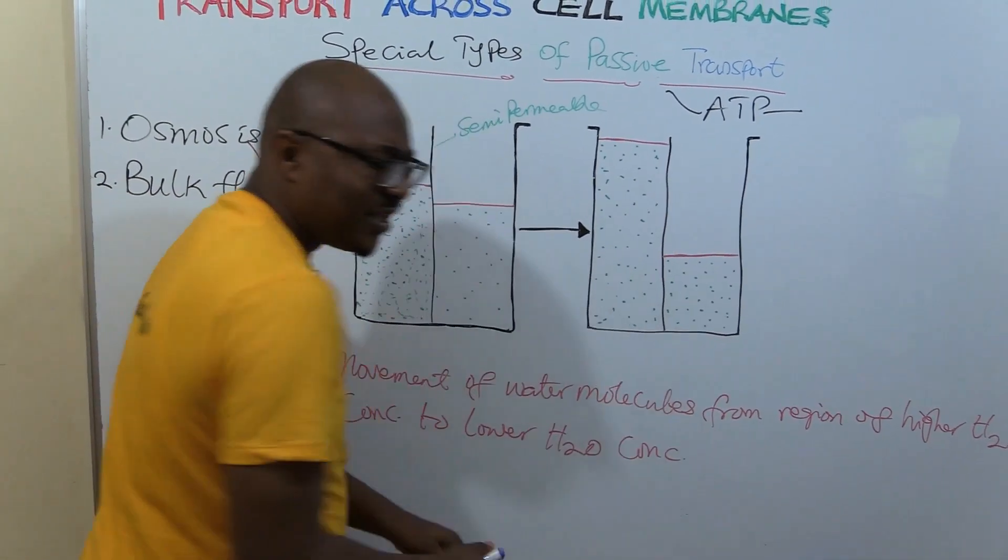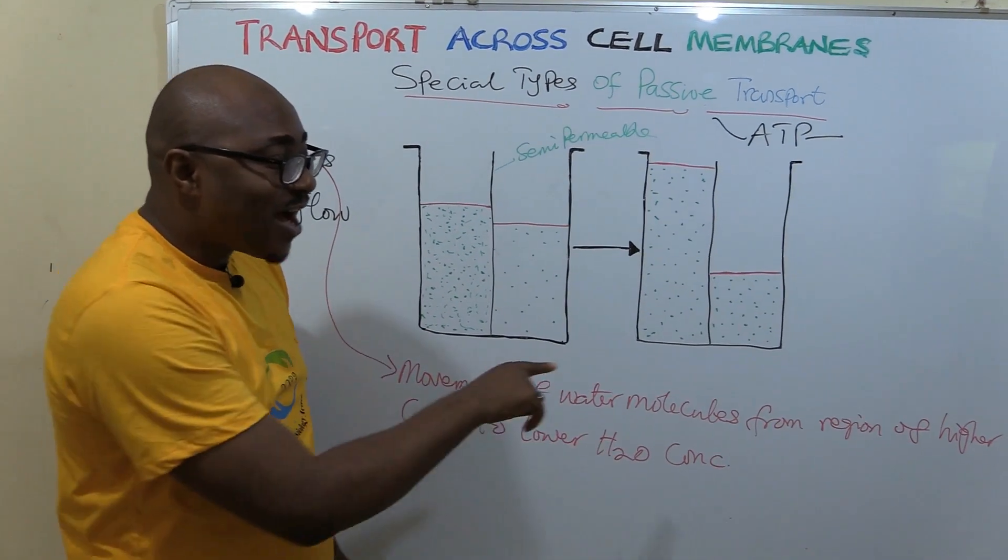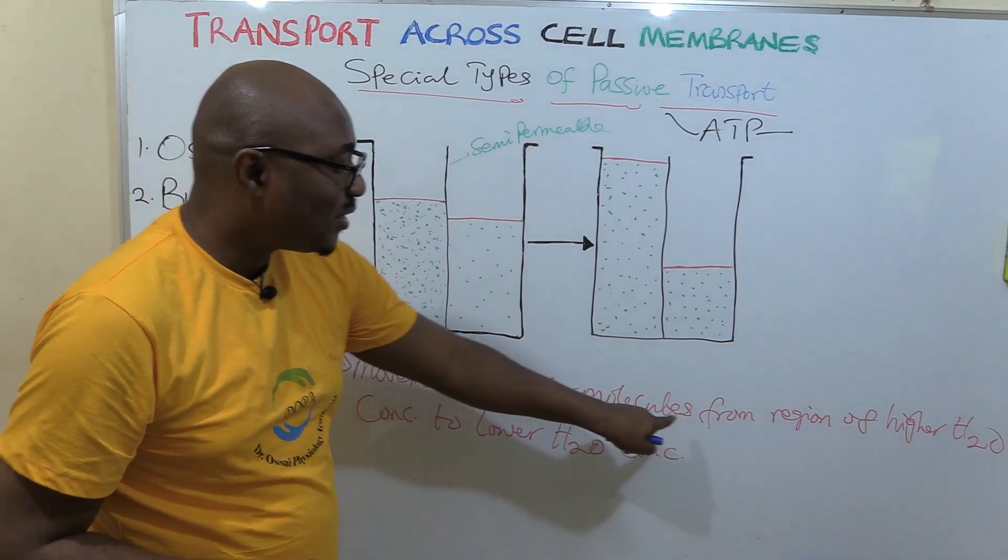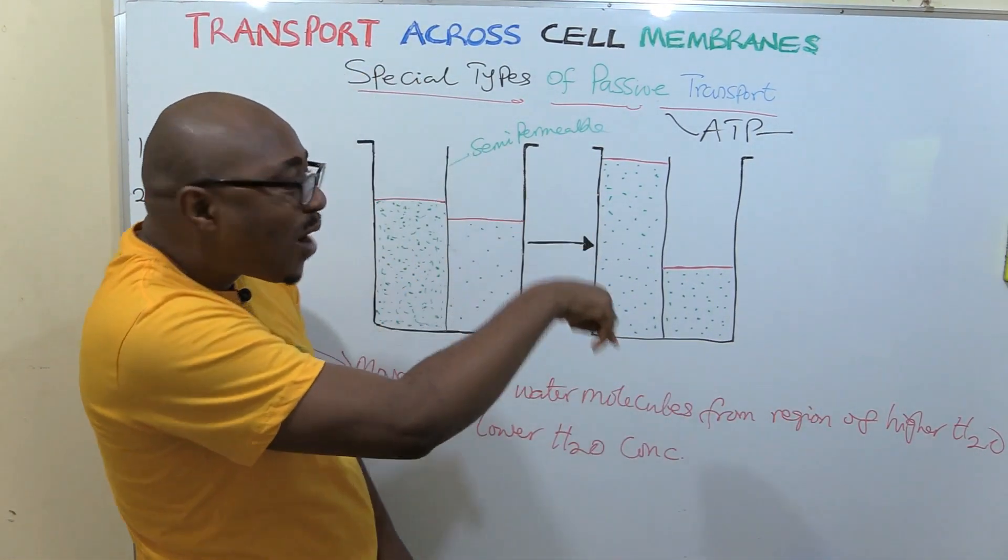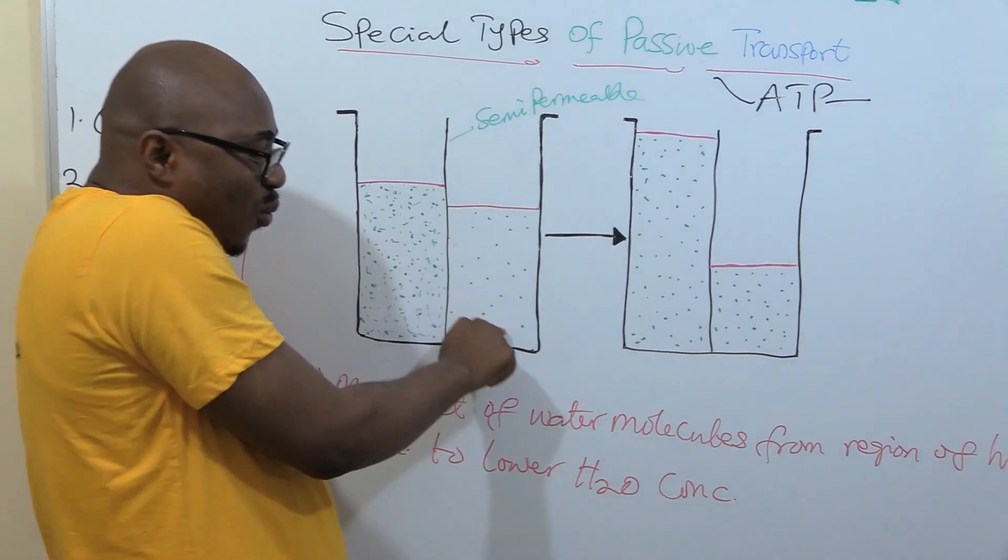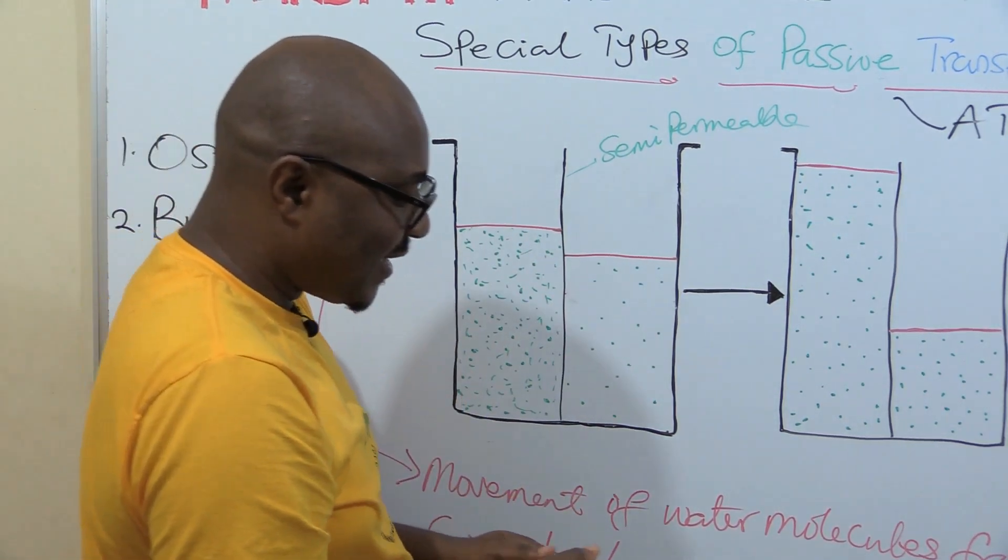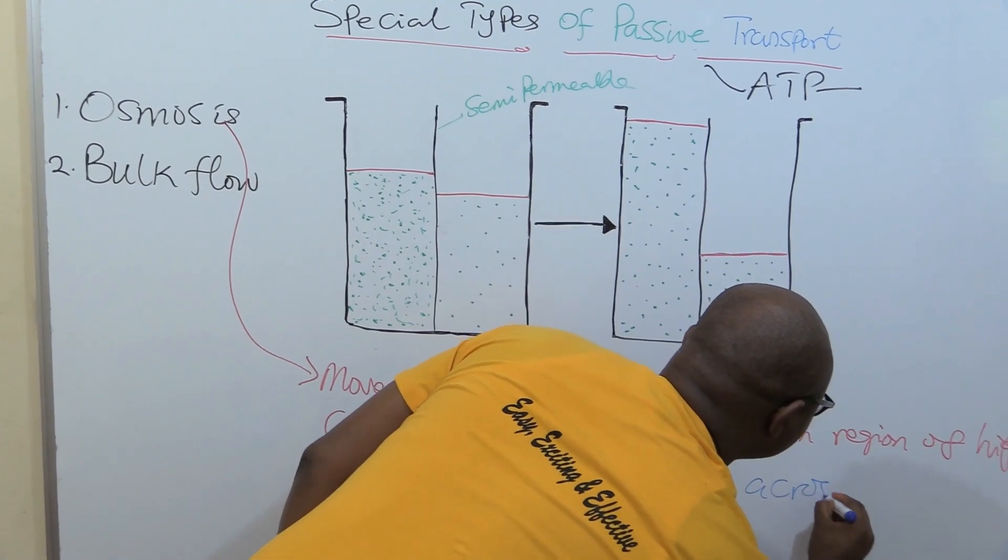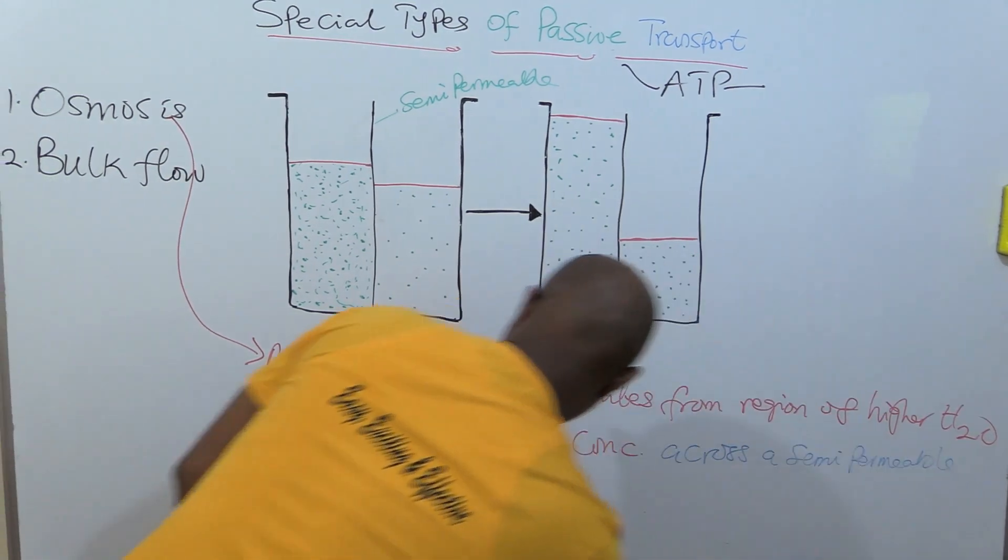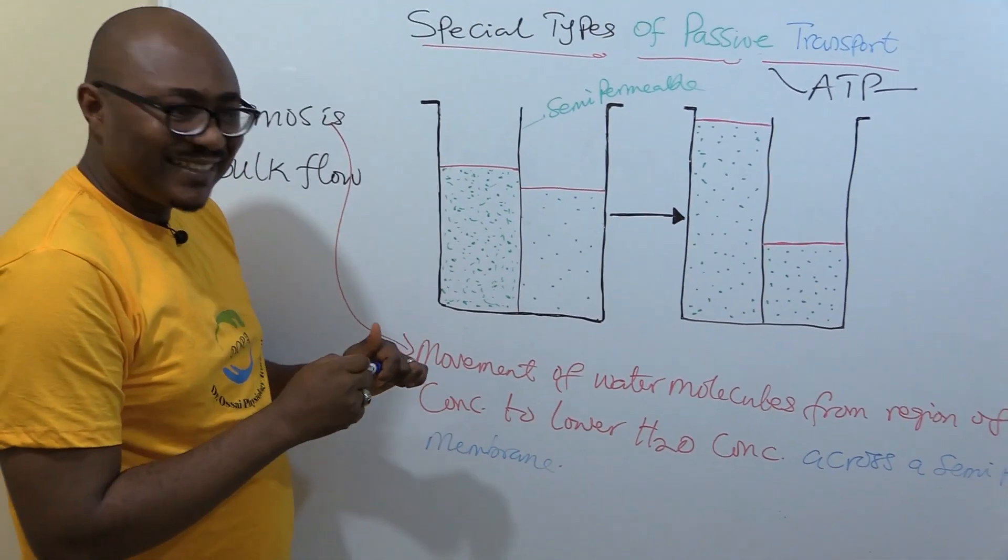I know what they taught you in secondary school physics or chemistry. It's a little bit different from what I've defined. Now, there's a trick. There's another definition. It's the movement of water molecules from region of lower solute concentration to region of higher solute concentration. So, you can define it in two ways. Then you now add across a semi-permeable membrane. This is osmosis for you.